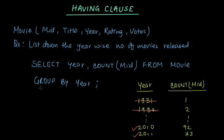So what modification will we do here? After this GROUP BY we need to also add the condition that this count should be greater than 50. So that is done with the help of HAVING clause. So with GROUP BY we will write HAVING COUNT(mid) greater than 50.